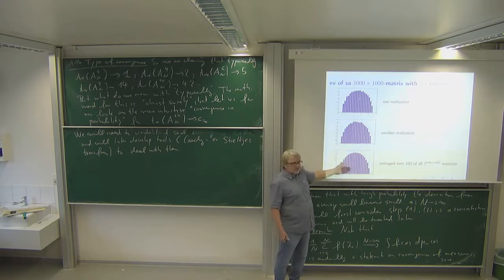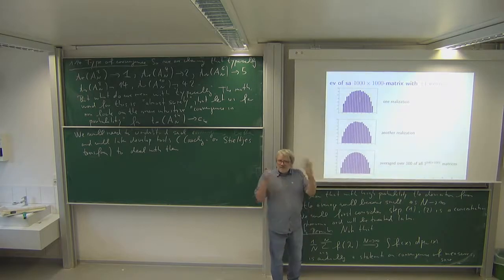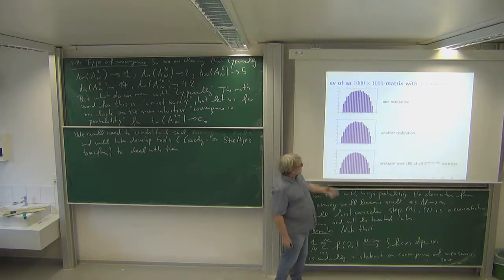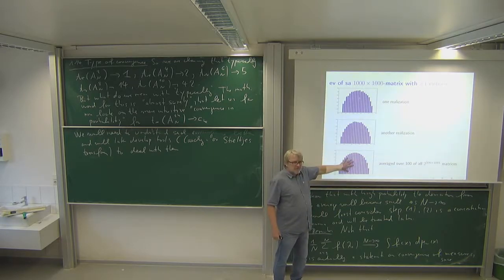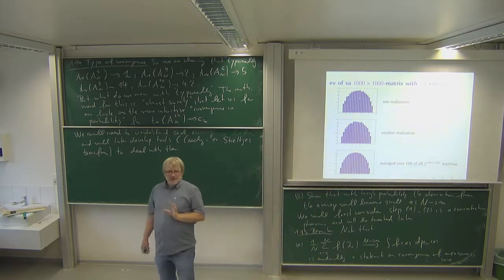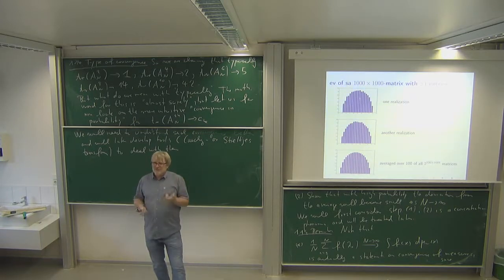To control this we need to control the fluctuations of the distribution, showing they go to zero. What we will do in the next few lectures is prove this behavior by averaging. And it's really a nice point that randomness really helps you to do calculations.